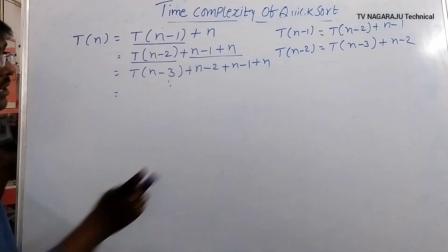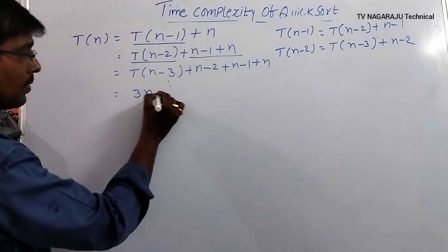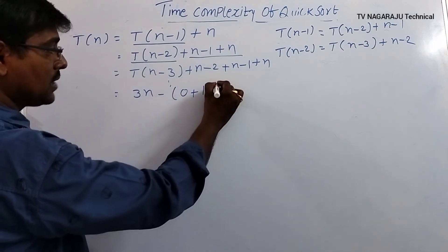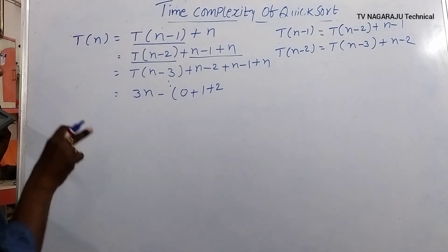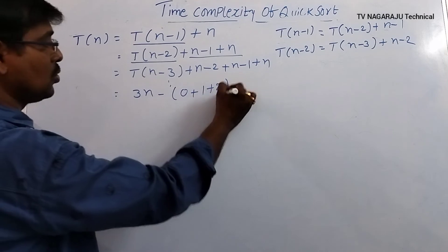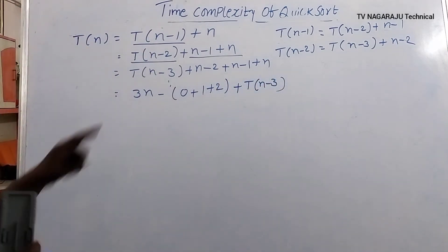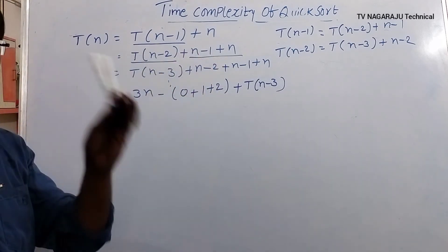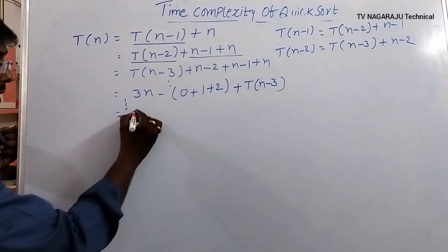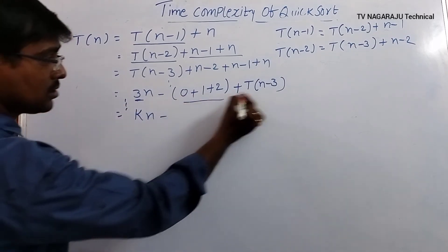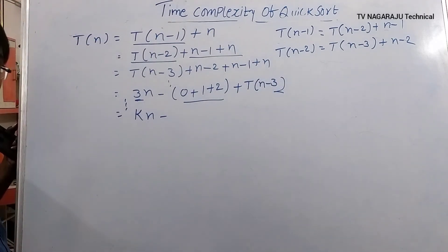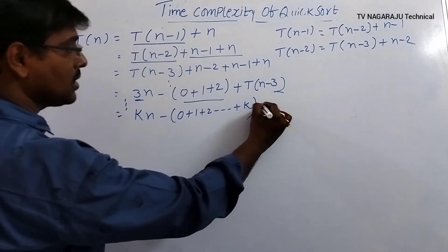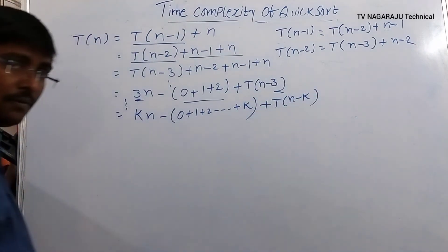After k iterations, the pattern gives: T(n) = T(n−k) + [n + (n−1) + (n−2) + ... + (n−(k−1))], which simplifies to T(n) = T(n−k) + k·n − (0 + 1 + 2 + ... + (k−1)) = T(n−k) + k·n − k(k−1)/2.